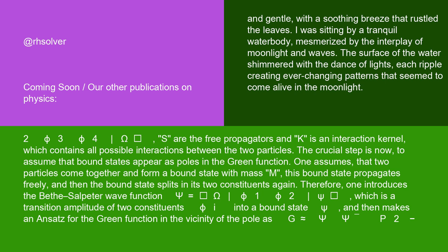Therefore, one introduces the Bethe-Salpeter wave function ψ equals ⟨Ω|φ₁φ₂|ψ⟩, which is a transition amplitude of two constituents φ into a bound state ψ, and then makes an ansatz for the Green function in the vicinity of the pole, as G is almost equal to ψψ/(P² - M²).